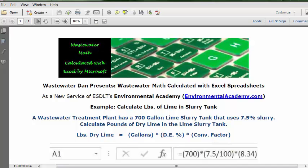The conversion factor from gallons to pounds is the fixed number in the formula, which in this case is 8.34.